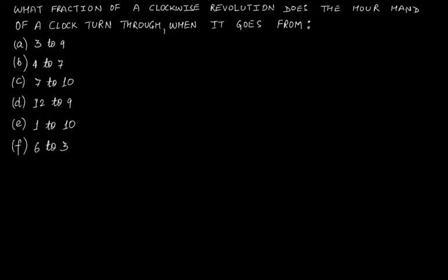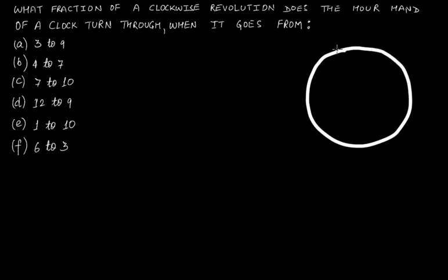Let's say that we have a clock here — something like this. We have 12 at the top, 3 on the right, 6 at the bottom, and 9 on the left. Then we have 1, 2, 4, 5, 7, 8, 10, and 11. So it's a rough diagram of a clock.